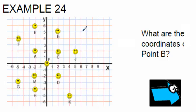All coordinates are written as an X comma Y, with the X first and the Y second, kind of like alphabetical order. We're looking for point B, which is right here in quadrant 1.